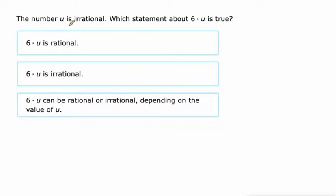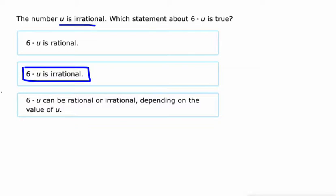We've got U is irrational, and it's being multiplied by a rational. That's one rational with one irrational — that's going to be irrational. The only way it could be rational is if they are both rational numbers being operated together, or both irrational.